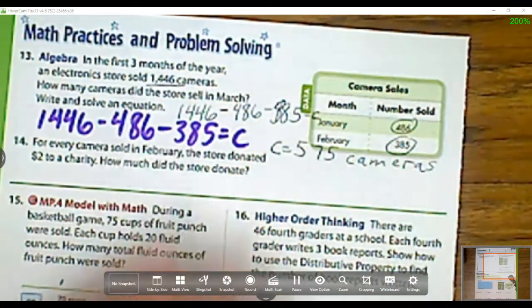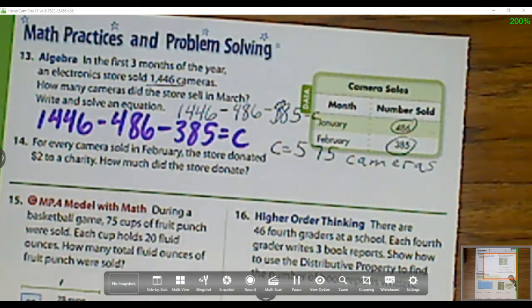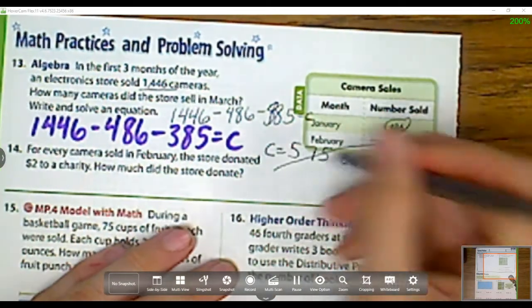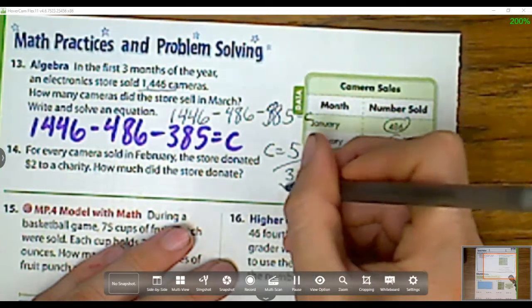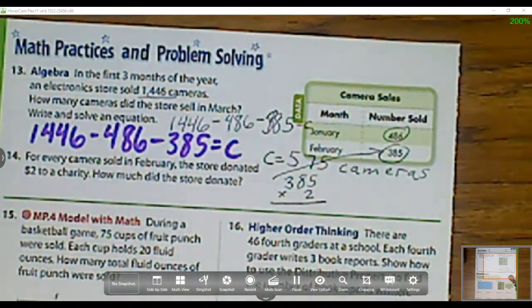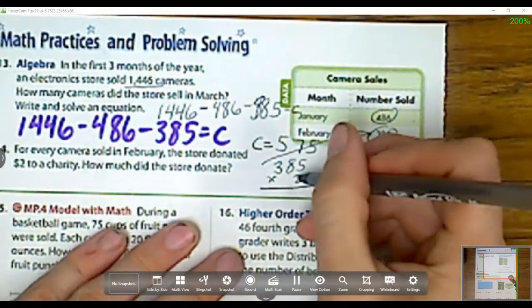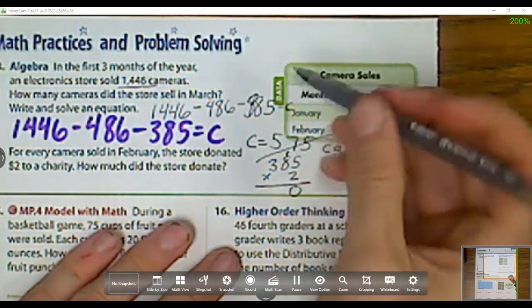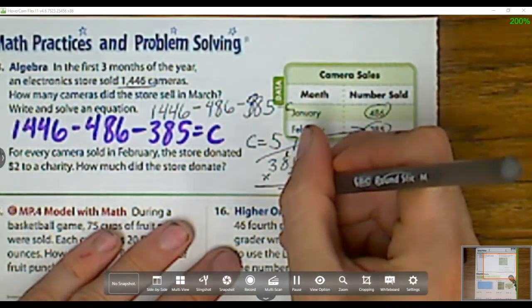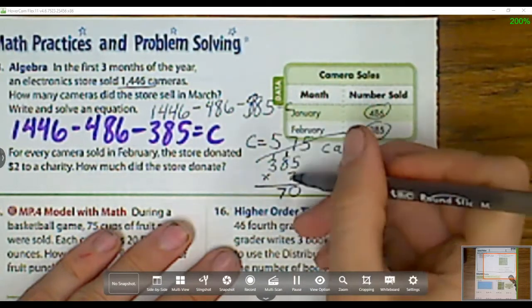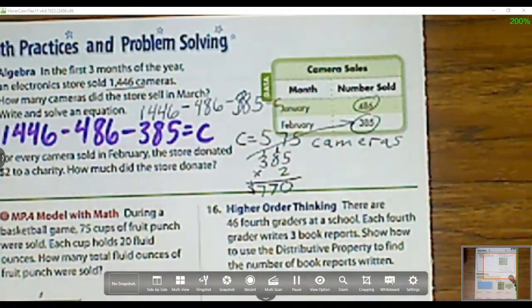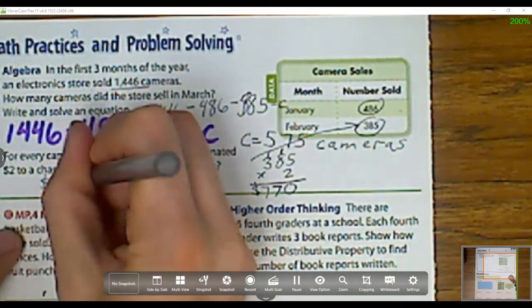Now question number 14 says this. For every camera sold in February, the store donated $2 to charity. How much did this store donate? I see February is right here, so I have 385 times 2. And I'm now going to multiply. I have 2 times 5 is 10, regroup that one. 2 times 8 is 16, plus 1 is 17, regroup that one. 2 times 3 is 6, plus 1 is 7. So how much did they donate to charity? They donated $770.